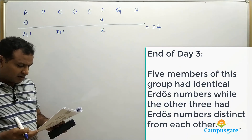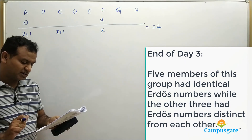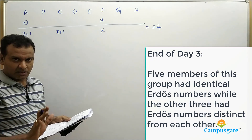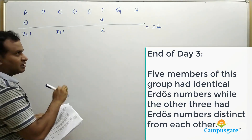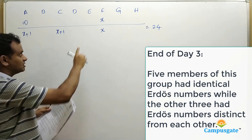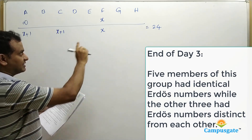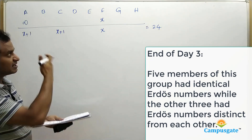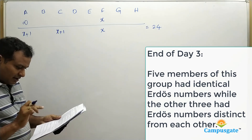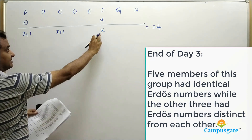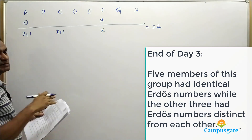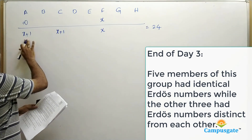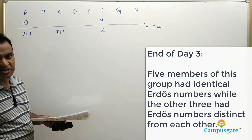At the end of the third day, five members had identical Erdős numbers while the other three had Erdős numbers distinct from each other. Five X's is not possible since F has the unique minimum Erdős number. It's also not possible for B, D, E, G, H to all be the same, since the three distinct numbers must include X and X plus 1 which are different. So X plus 1 must be the number held by five people, with the remaining three numbers distinct from each other.